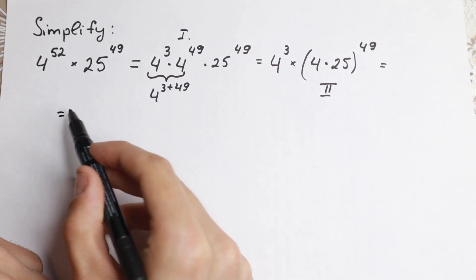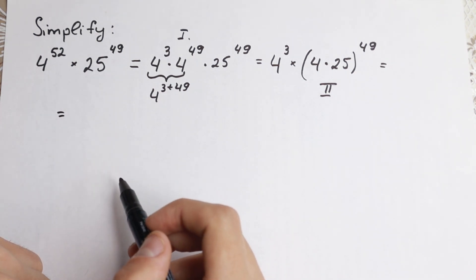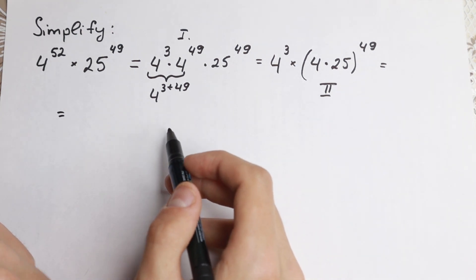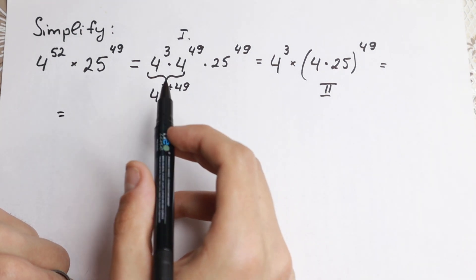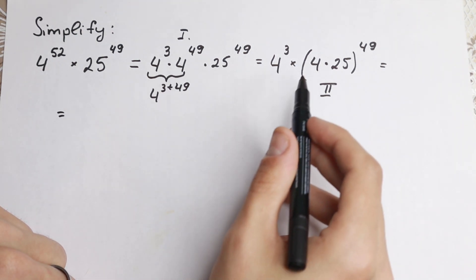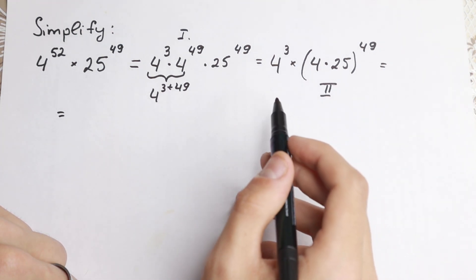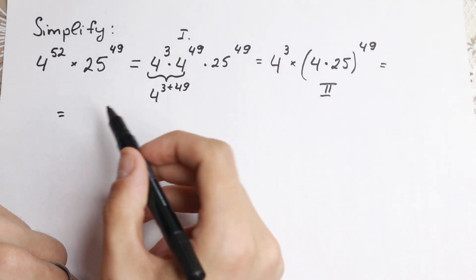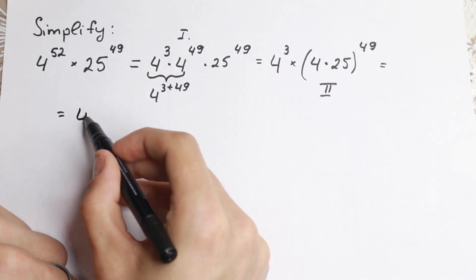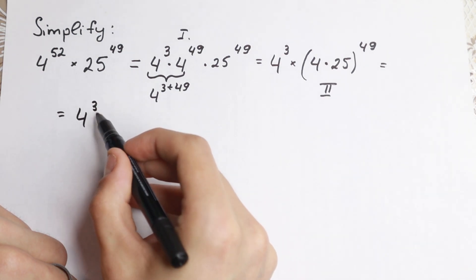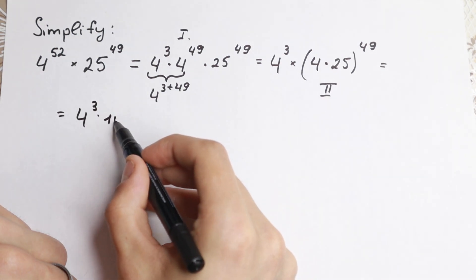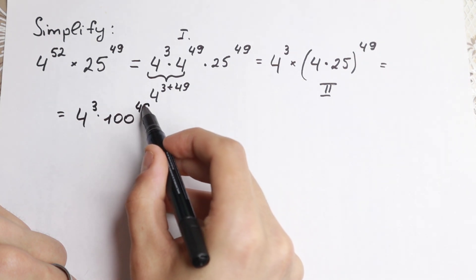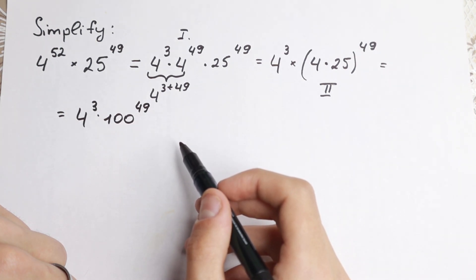Now we can easily multiply the numbers inside the parentheses. 4 times 25 equals 100, which is really convenient. So we have 4 cubed times 100 to the power of 49.